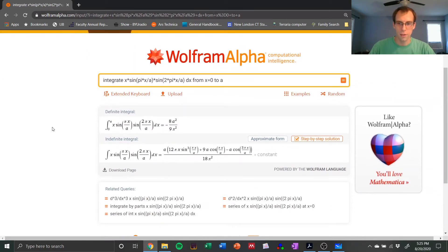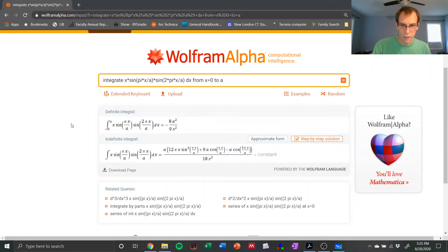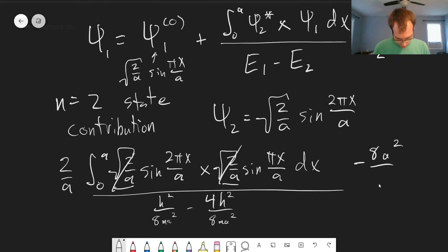And our definite integral is equal to negative 8a² over 9π². So negative 8a² over 9π² divided by this difference in energies here, so we'll get negative 3h² over 8ma². So we'll get a positive coefficient here.